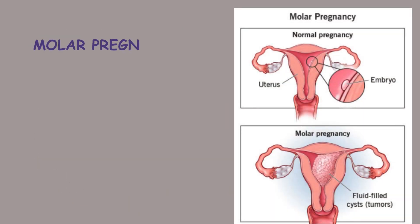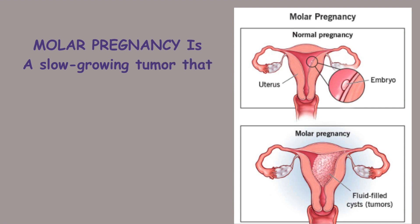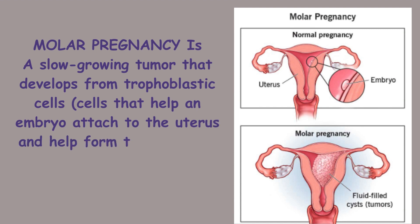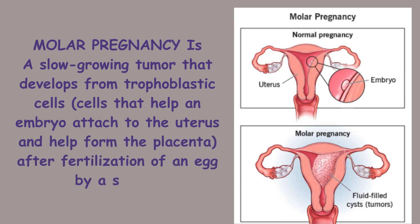Molar pregnancy is a slow-growing tumour that develops from trophoblastic cells – cells that help an embryo attach to the uterus and help form the placenta – after fertilisation of an egg by a sperm.